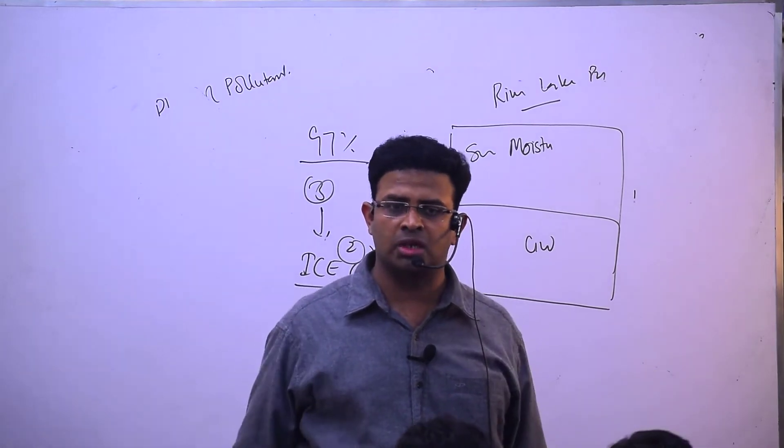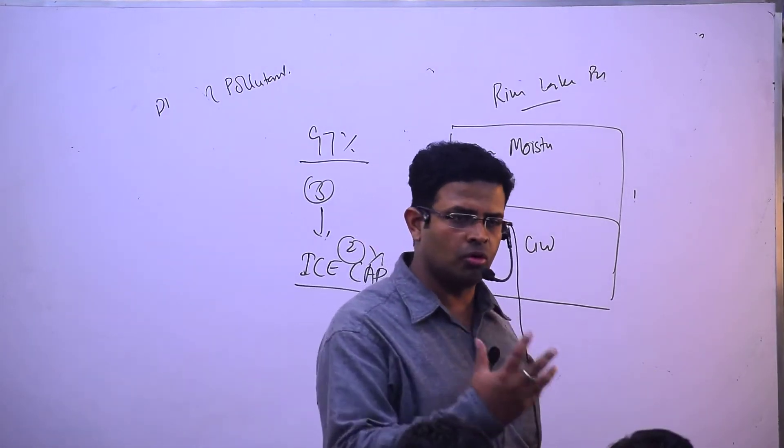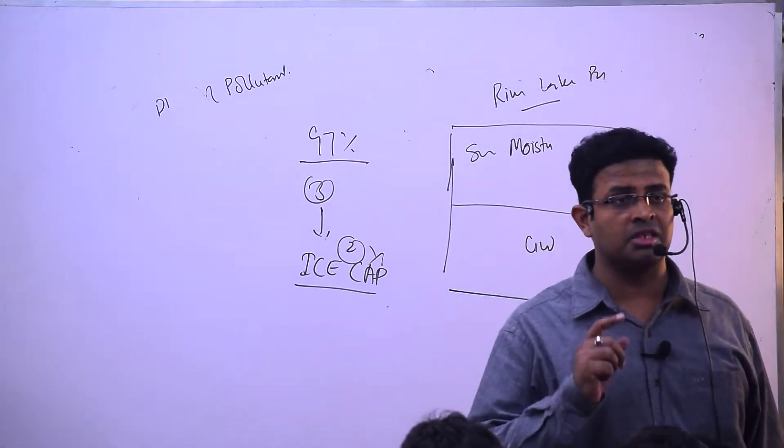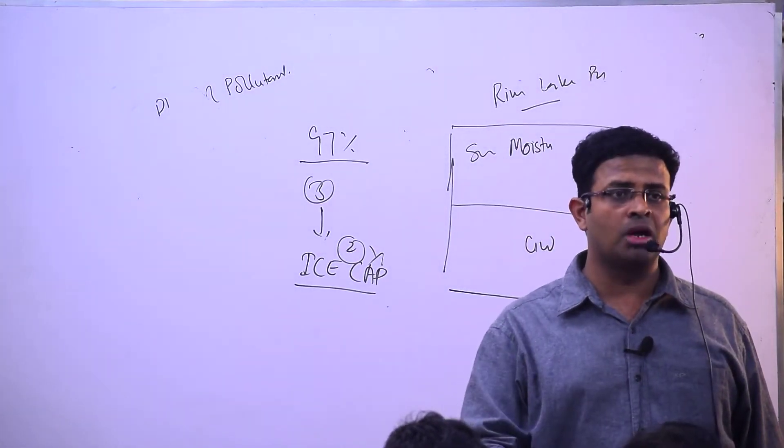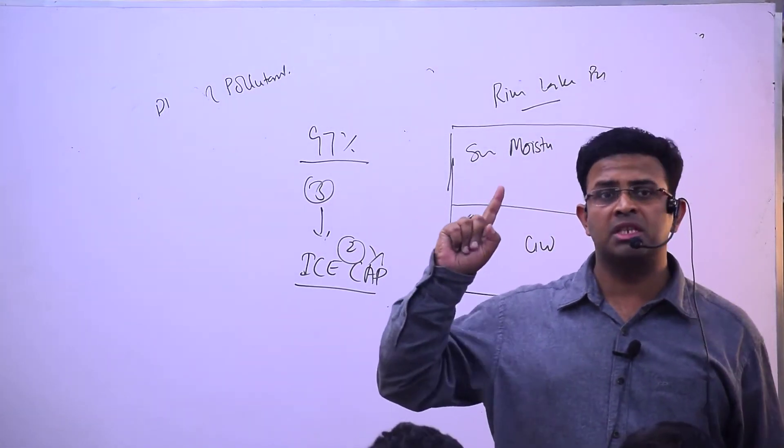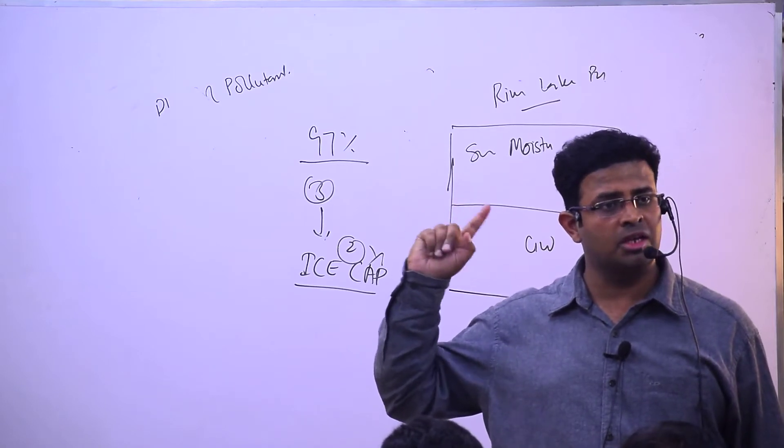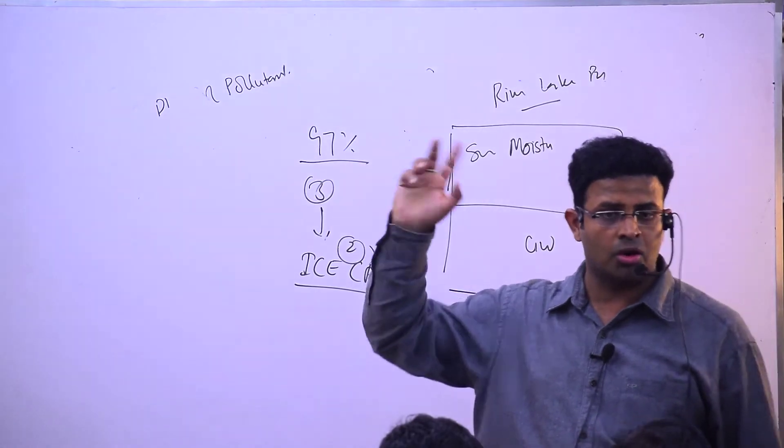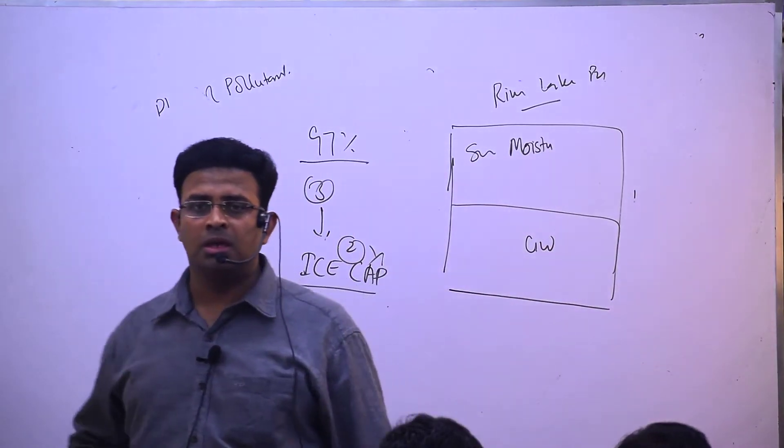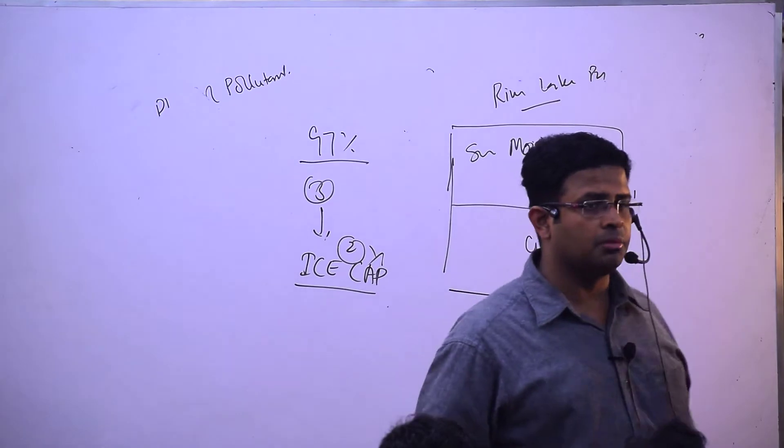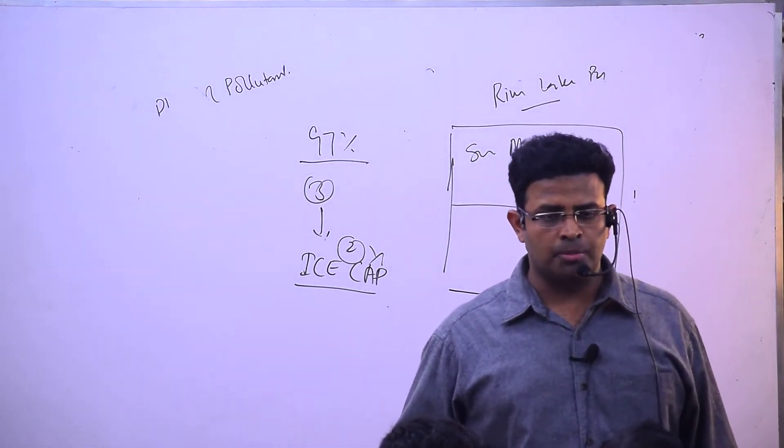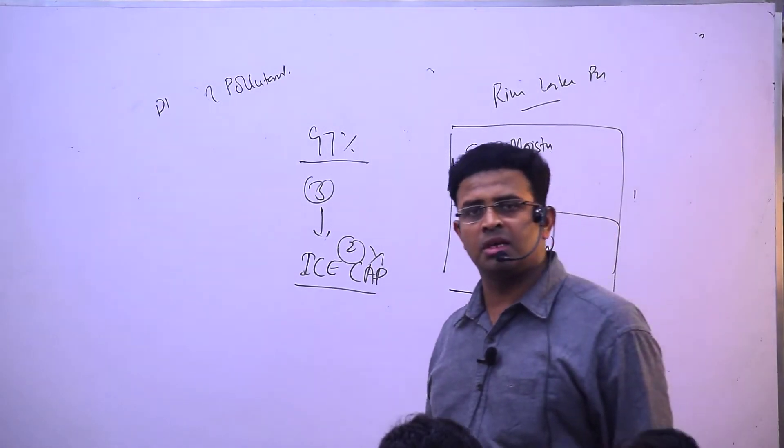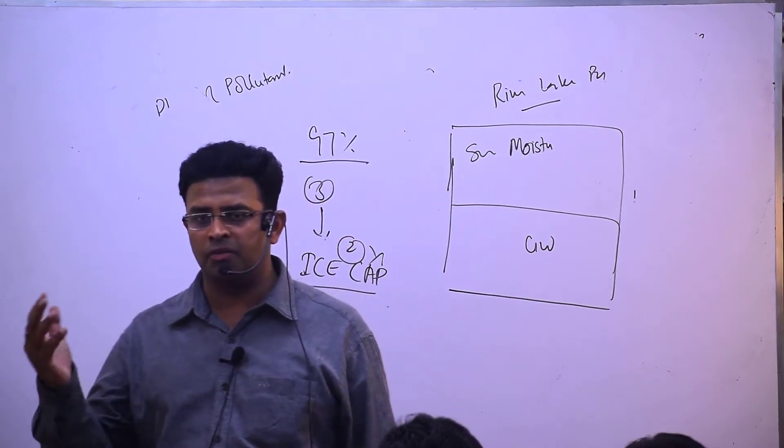Other greenhouse gases include ozone, chlorofluorocarbon, and hydrochlorofluorocarbon. As the molecular structure becomes larger, global warming potential increases. However, carbon dioxide is most abundant in the atmosphere, so we work on reducing that one.